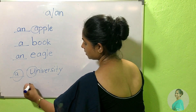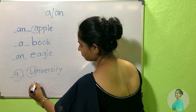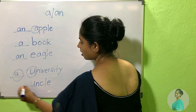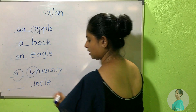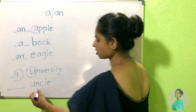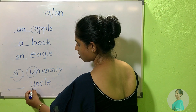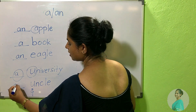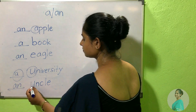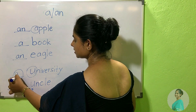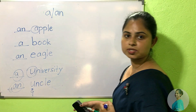But here we can. What is the answer? Uncle. Uncle starts with an 'A' sound, so an uncle. Here we can use 'an'. Here — for university — we can't use 'an'.